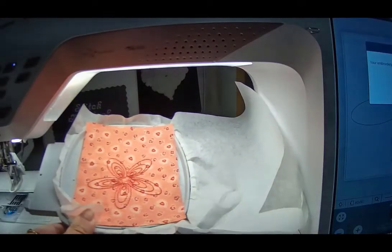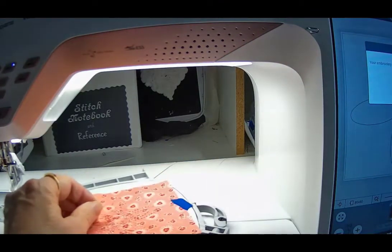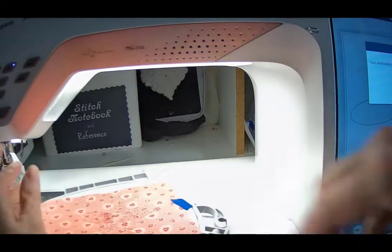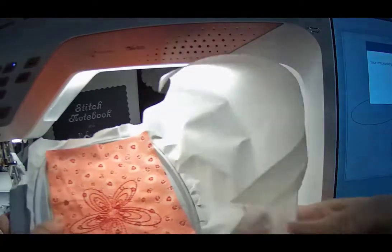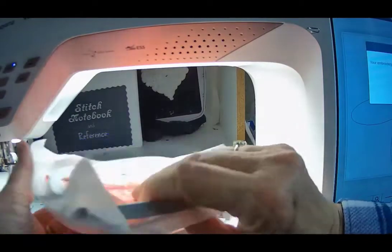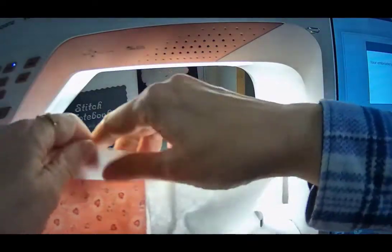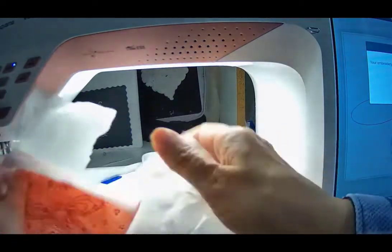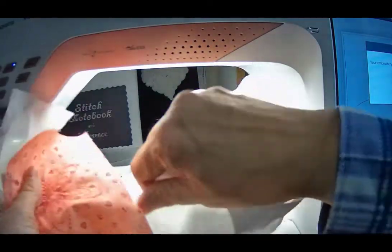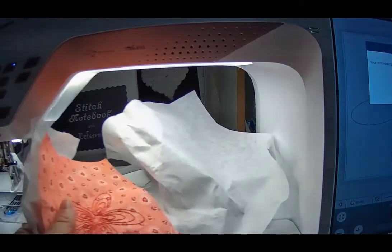The design is all stitched out and I used white on the back. It's not a big deal, but if you wanted to match that color on the back, you could do that. It might make it a little bit nicer, but I'm just going to unhoop it. I like to tear away first because I get nice big chunks of tear away. And then I'm going to just trim all around this.